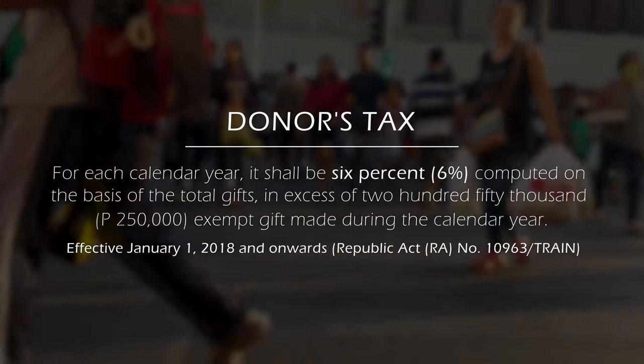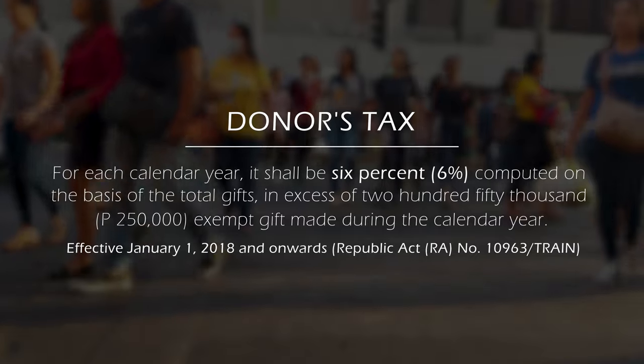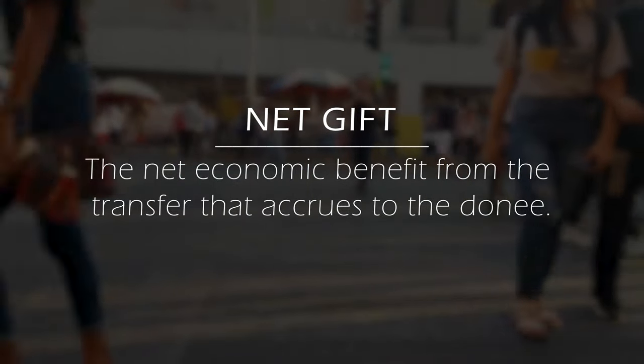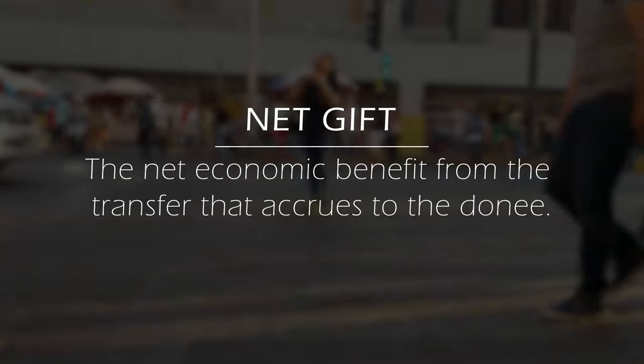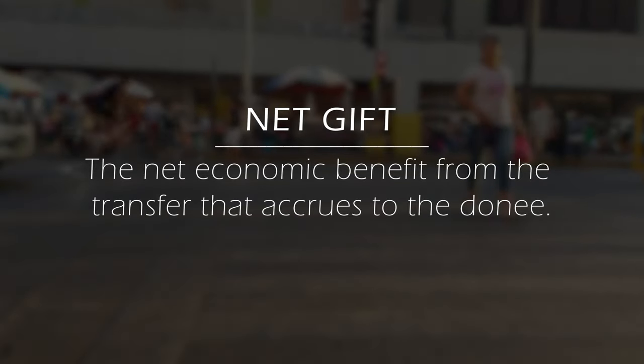Because of the update of the TRAIN Law, we no longer determine the relationship between the donor and the donee — whether they are strangers or relatives. The computation of donor's tax has been simplified: it is now 6% based on the total net gift in excess of the 250,000 exempt gifts made during the calendar year. Net gift shall mean the net economic benefit from the transfer that accrues to the donee. For example, if a donor gifts a mortgaged property and imposes the mortgage liability on the donee, the net gift is computed by deducting from the fair market value the amount of mortgage assumed.